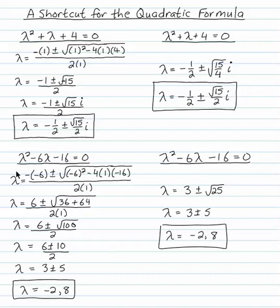For a demo, look at this one: λ² - 6λ - 16 = 0. Traditional quadratic formula gives me a perfect square underneath, and so I end up with 3 ± 5, which is -2 and 8. I'm just showing you a shortcut to get to the 3 ± 5.